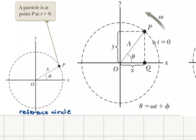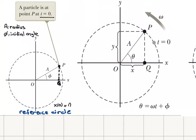What I have here is a point P, which is moving in a circular path with radius A and initial angle phi. If I take the projection of this point P to the x-axis, I find point Q. Point Q is located at A cosine phi on the x-axis. On my reference circle, A is the radius, phi is the initial angle. The position of point Q at t equals 0 is A cosine phi.